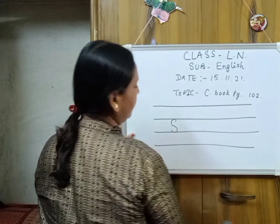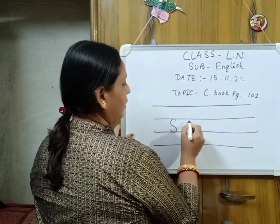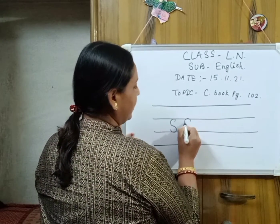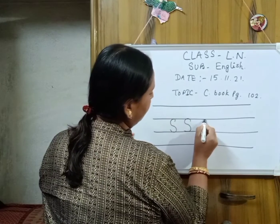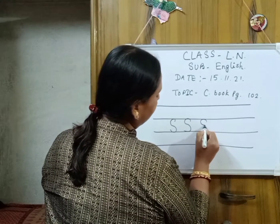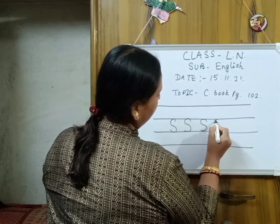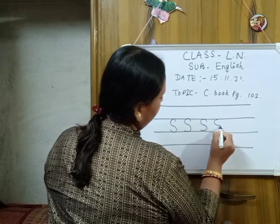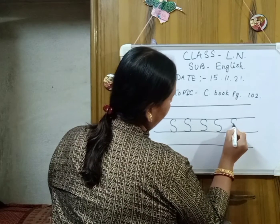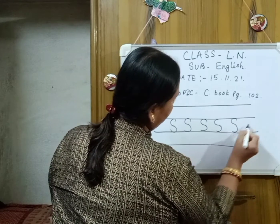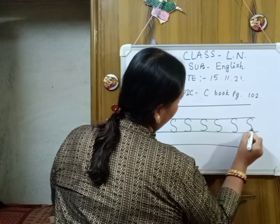Make it like a snake — make a curve. There is one curve here and another curve, like this. Okay children, like this, okay.